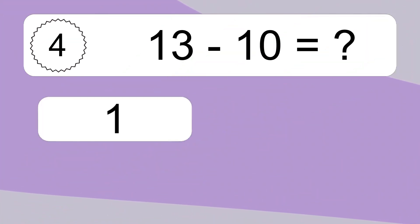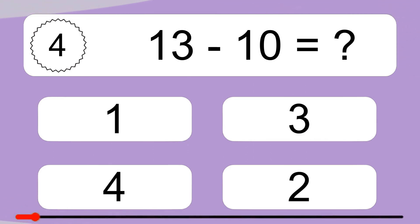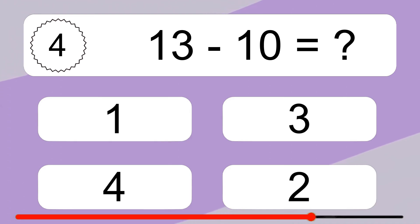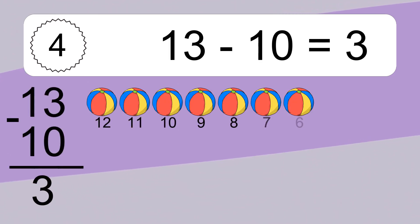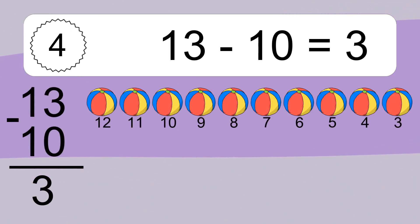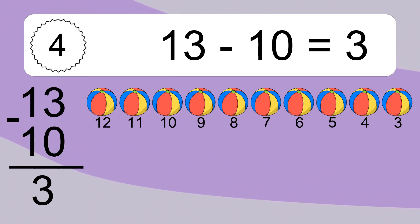13 minus 10 equals what? 13 minus 10 equals 3. Let's count it. 12, 11, 10, 9, 8, 7, 6, 5, 4, 3.